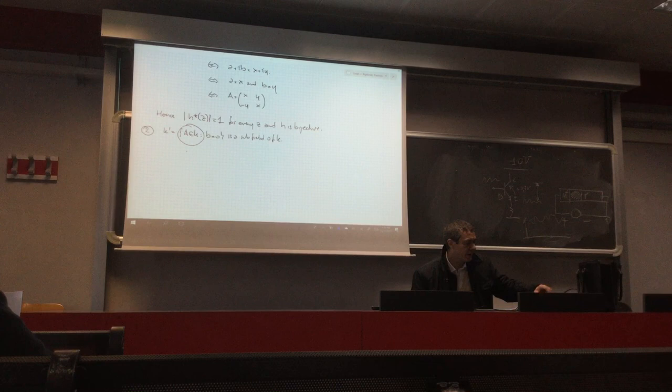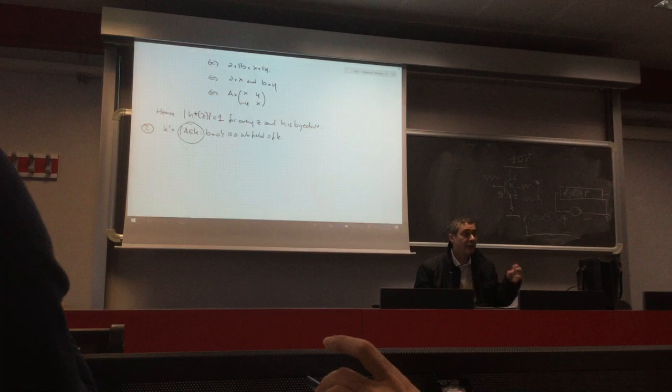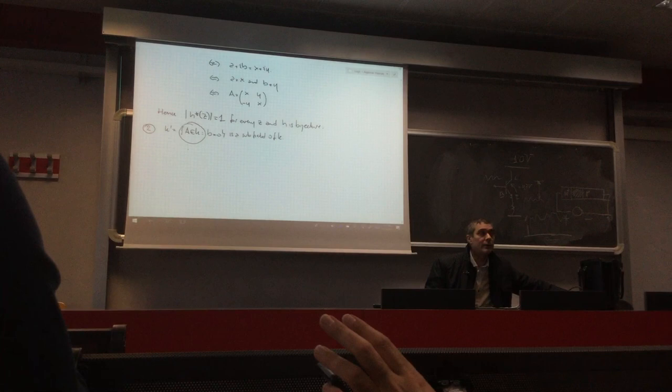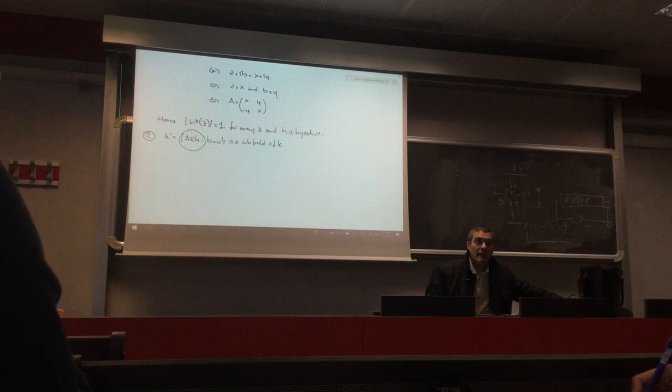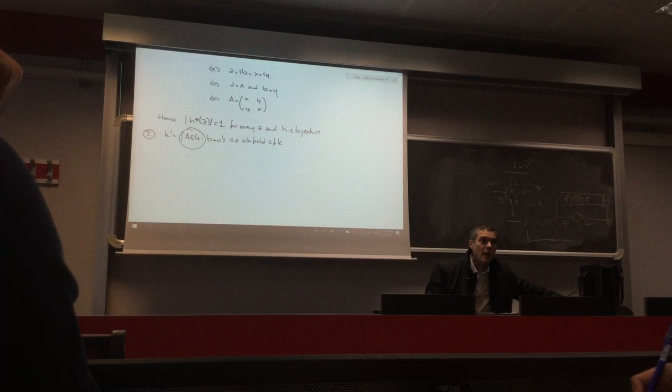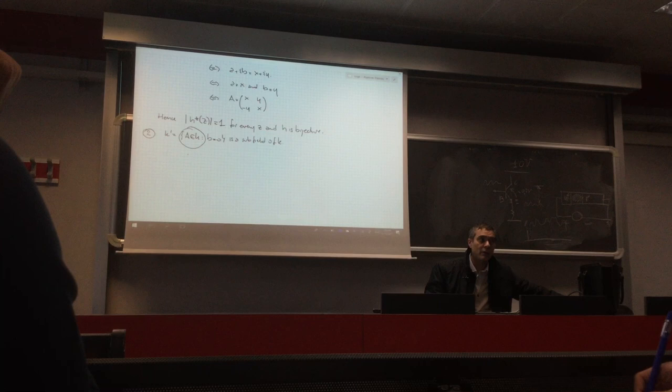Since K' is a subset of K, to prove it is a subfield I will first prove it is a subring and then that it is a field. We have an advantage: we already know K is commutative, so any subring of K will automatically be commutative. We won't need to check commutativity separately.